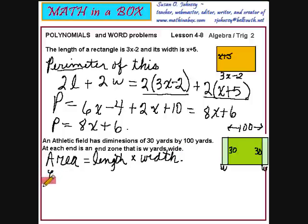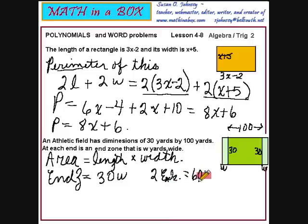Let's look at an end zone. What is the length of the end zone? It's 30. And what is the width? W. So for one end zone, we have 30W. So for two of those, two end zones, we will have 60W.